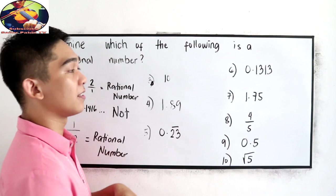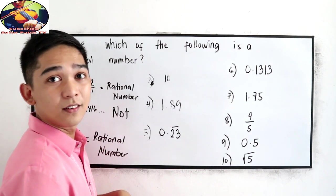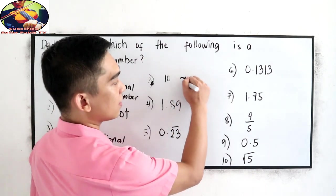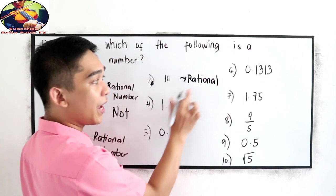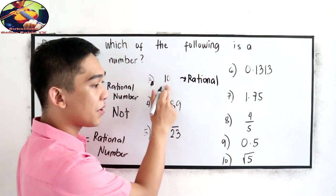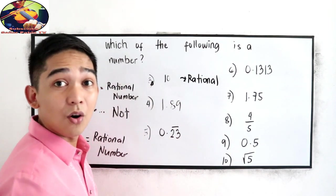For 3b, 10. This is a rational number. Why? Because 10 can be written as 10 over 1.